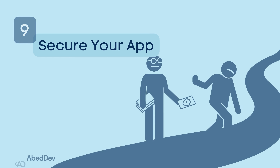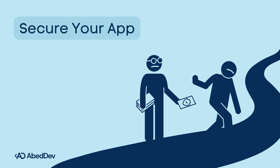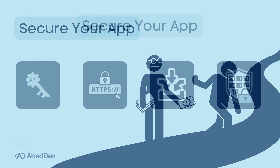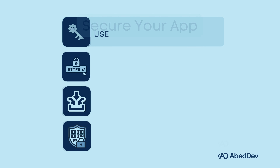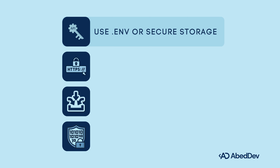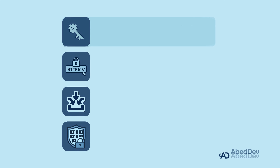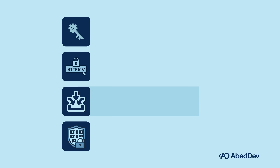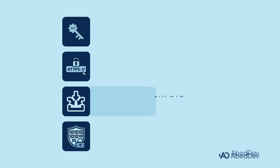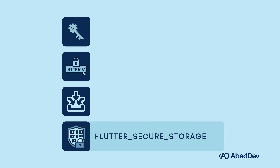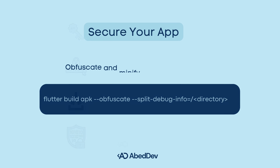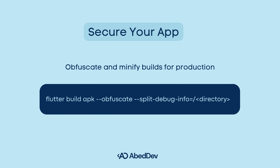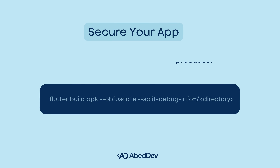Secure your app. Security is often overlooked but critical in mobile apps. Best practices for Flutter apps: don't hardcode API keys — use .env or secure storage. Use HTTPS for all network calls. Validate all inputs on both client and server sides. Encrypt sensitive data using flutter_secure_storage. Obfuscate and minify builds for production.